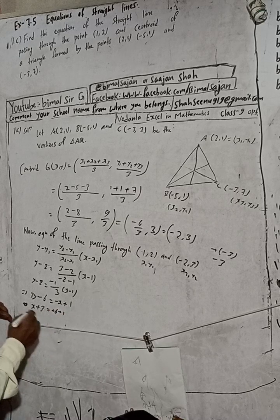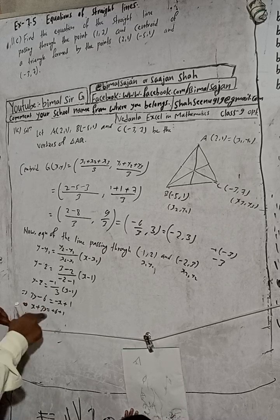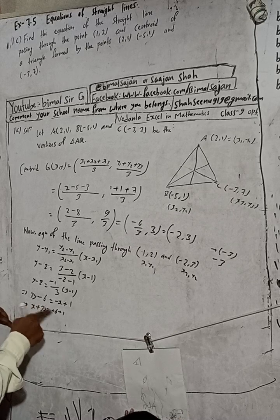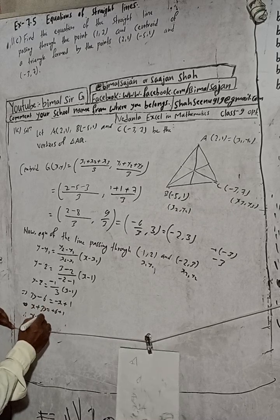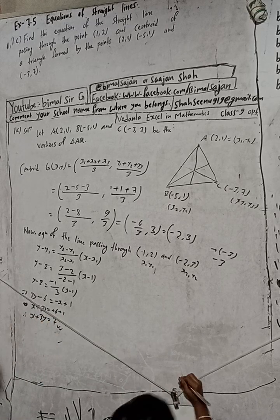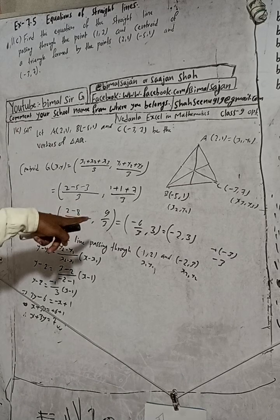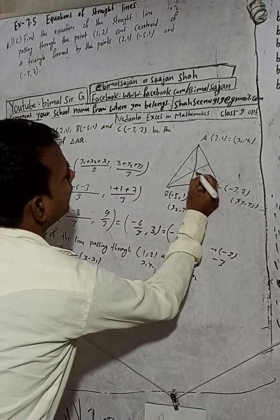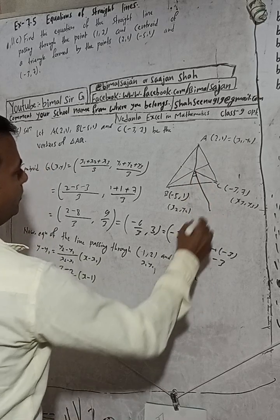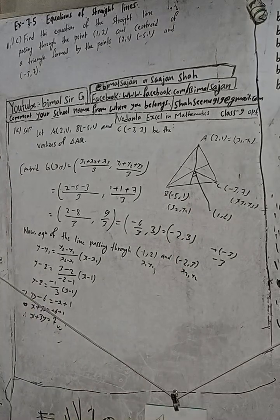Therefore x + 3y = 7. This is the required equation of the straight line passing through the point (1, 2) and the centroid G = (-2, 3) of the triangle.